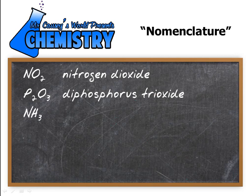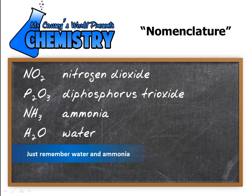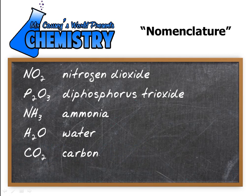NH3 — now before you say it's nitrogen trihydride, it's not. NH3 is a very old compound and it has a common name: it's called ammonia. We don't call it nitrogen trihydride — it's referred to as ammonia. And then there's H2O. Everybody recognizes H2O — it's water, and that's what we call it. It is not dihydrogen oxide; it's water. Now we have CO2 — write down carbon, we have two oxygens, so it's carbon dioxide.